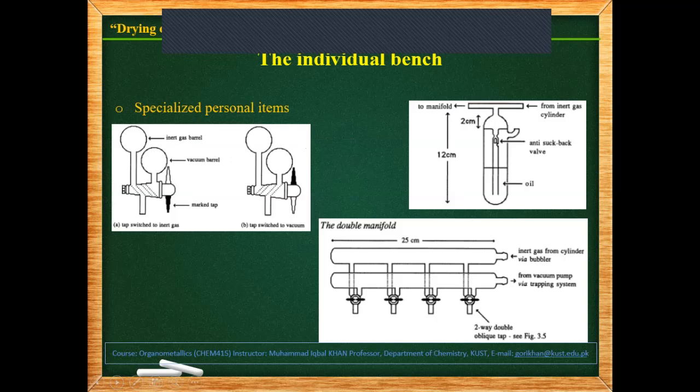Then we have the double manifold Schlenk line, as I have already described this to you. Here is the cross section of these taps — these are two-way double oblique taps. If they are connected to the upper barrel, which is the inert gas barrel, and the lower barrel, which is the vacuum barrel — if you want to connect your glassware and fill it with nitrogen or argon, it connects to the inert gas barrel. When closed, and if you want to connect to the vacuum, you turn this to connect with the vacuum barrel.